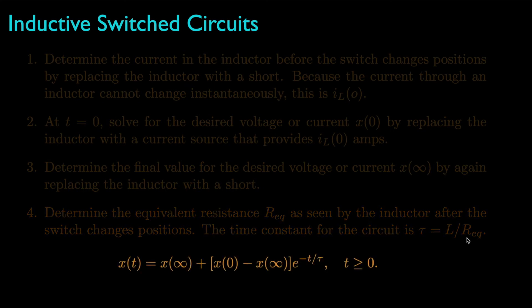Then, just like we did for capacitive circuits, the desired voltage or current after the switch has been changed is its final value plus the product of the difference between the initial and final values times e to the negative t over tau.